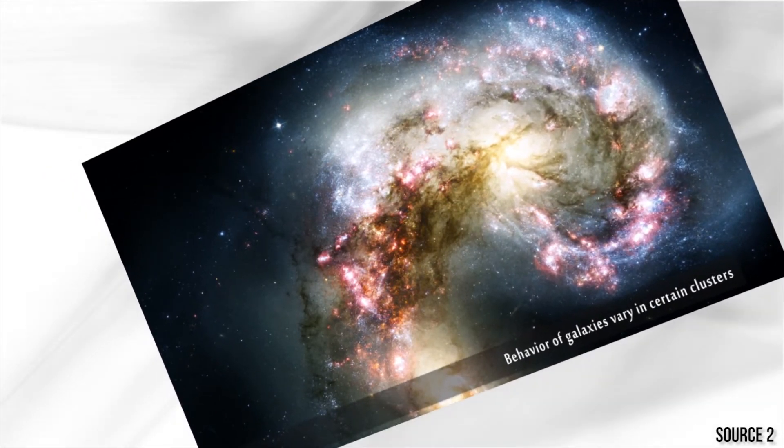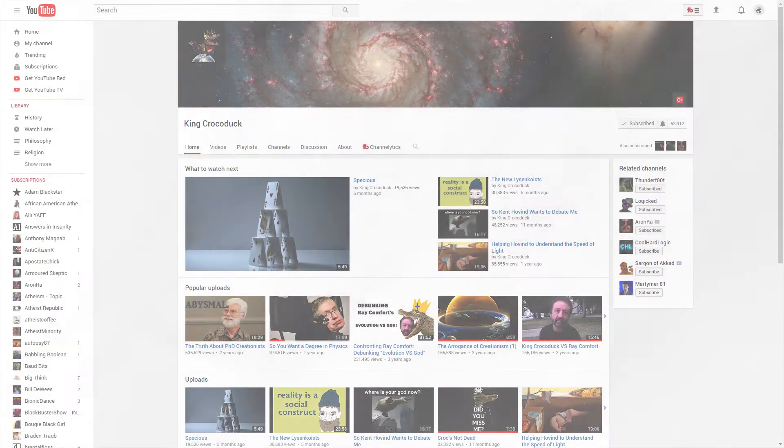This undetectable matter has a direct gravitational influence on normal matter that has mass. YouTuber and physicist King Crocoduck explains why galaxies are held together when they should be separating.